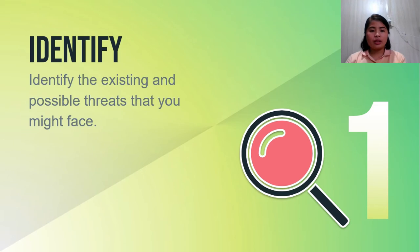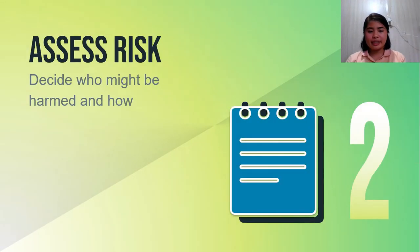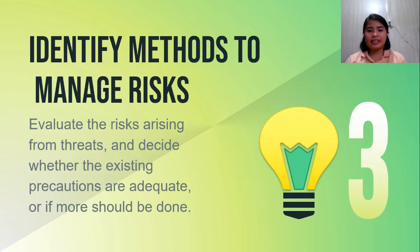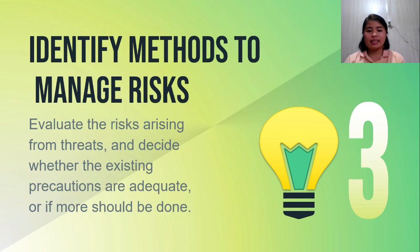Step one: identify the existing and possible threats that you might face. Step two: decide who might be harmed and how. Step three: identify methods to manage risk. Evaluate the risk arising from threats and decide whether the existing precautions are adequate or if more should be done.